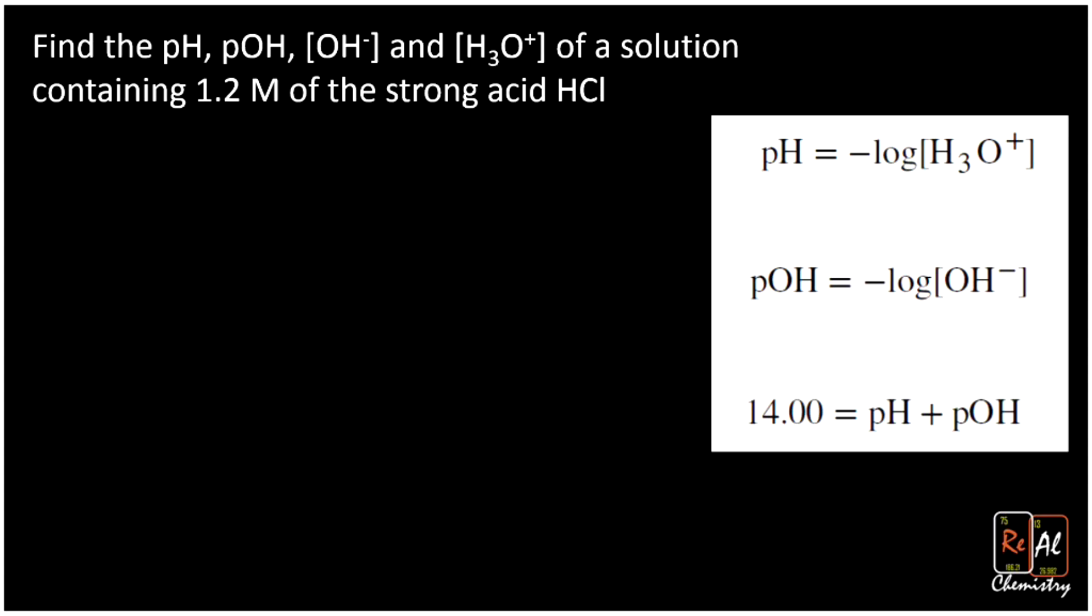Now, it's really important here that it tells us this is a strong acid. And that means that every single one of my hydrogen ions on the HCl is going to fall off and make H3O+. And so that means that my HCl concentration of 1.2 molar is actually exactly equal to my H3O+.